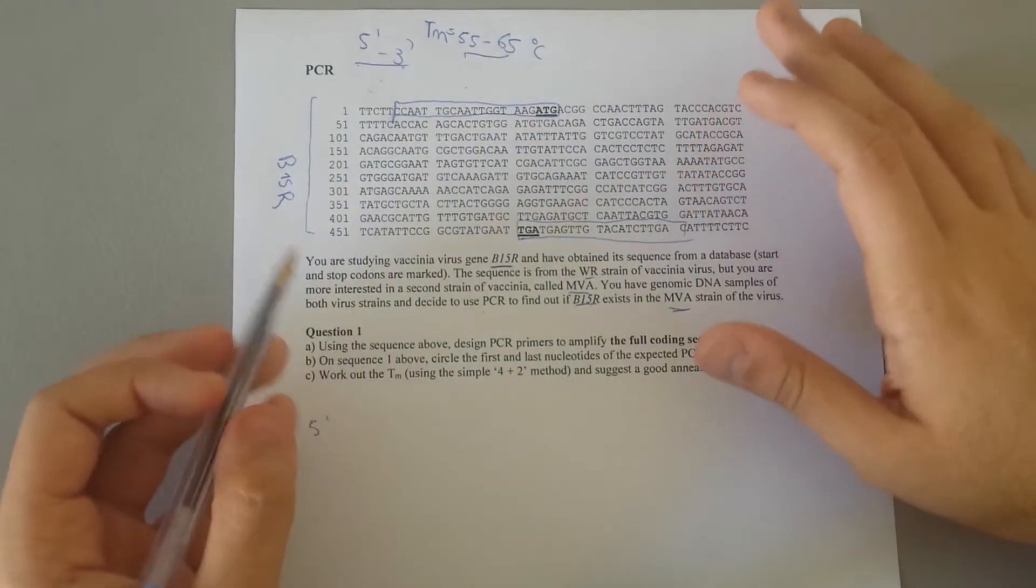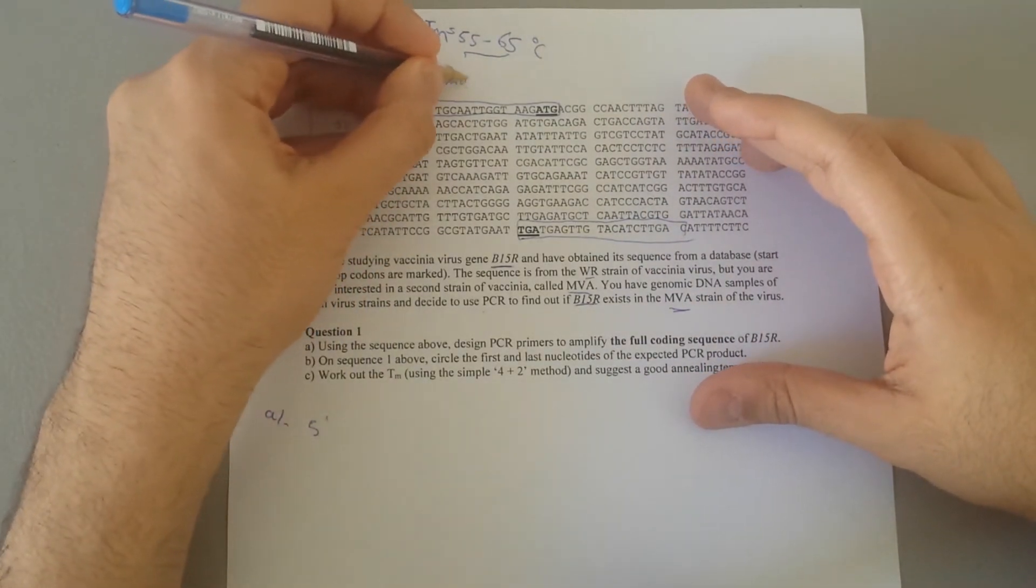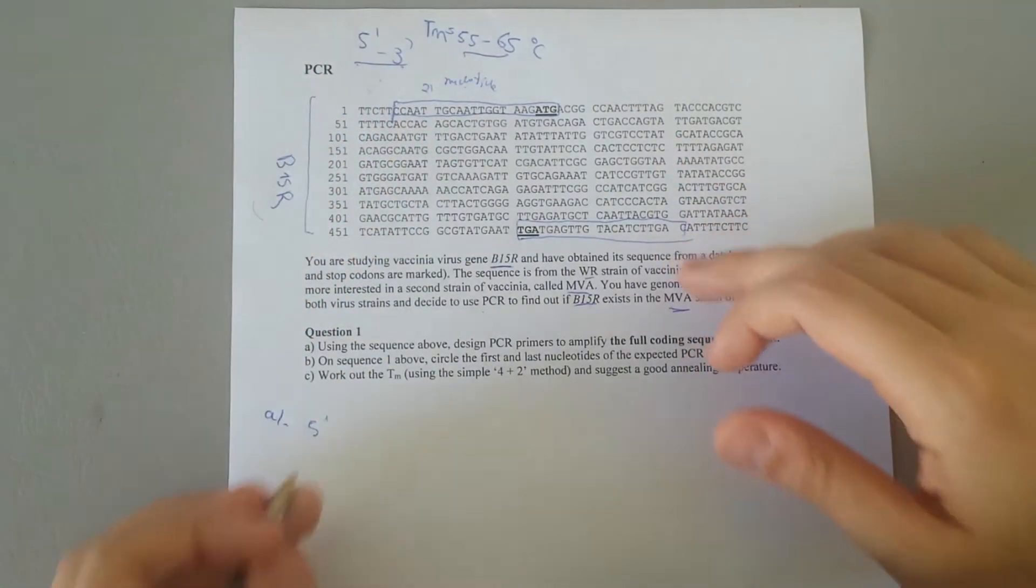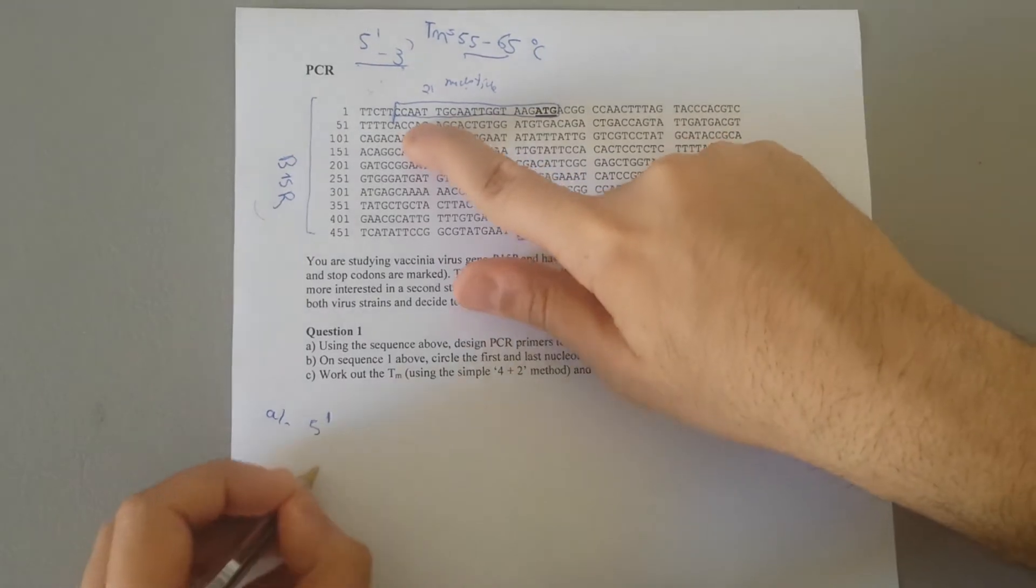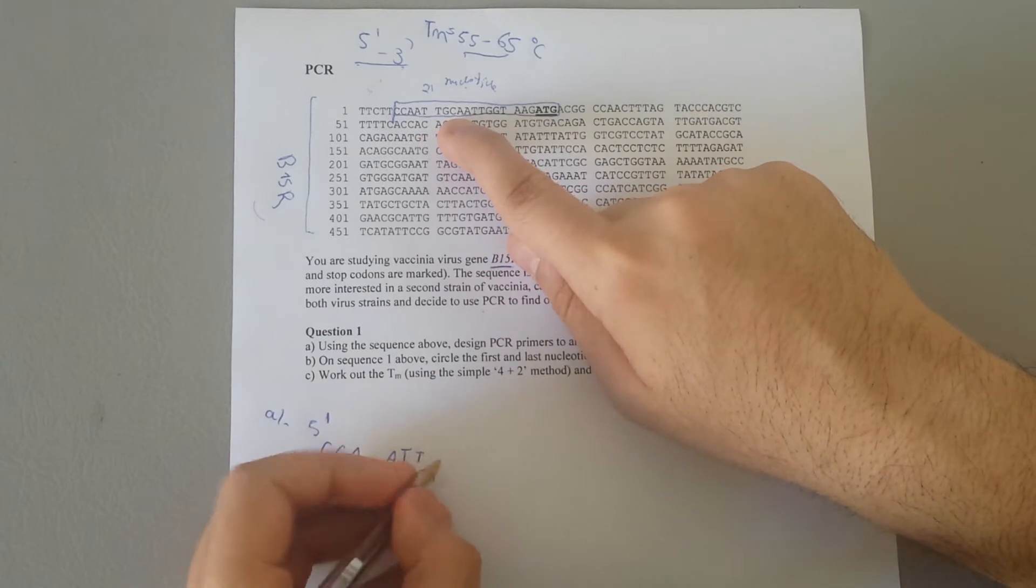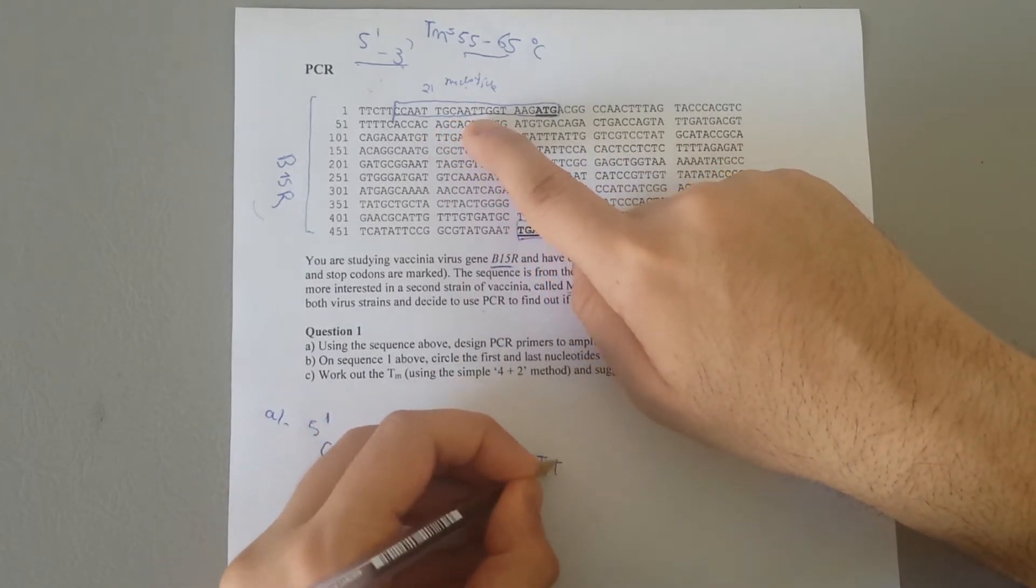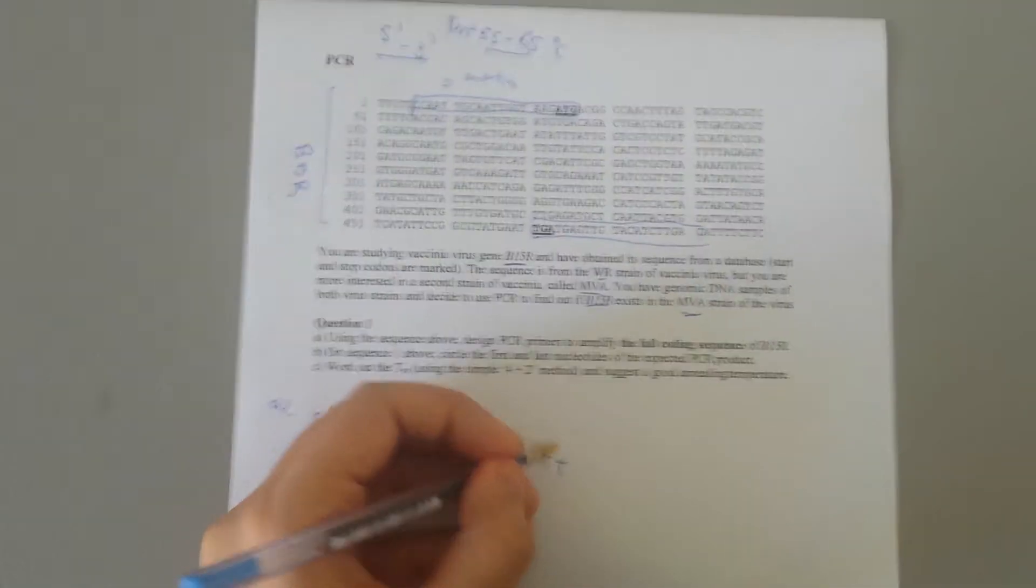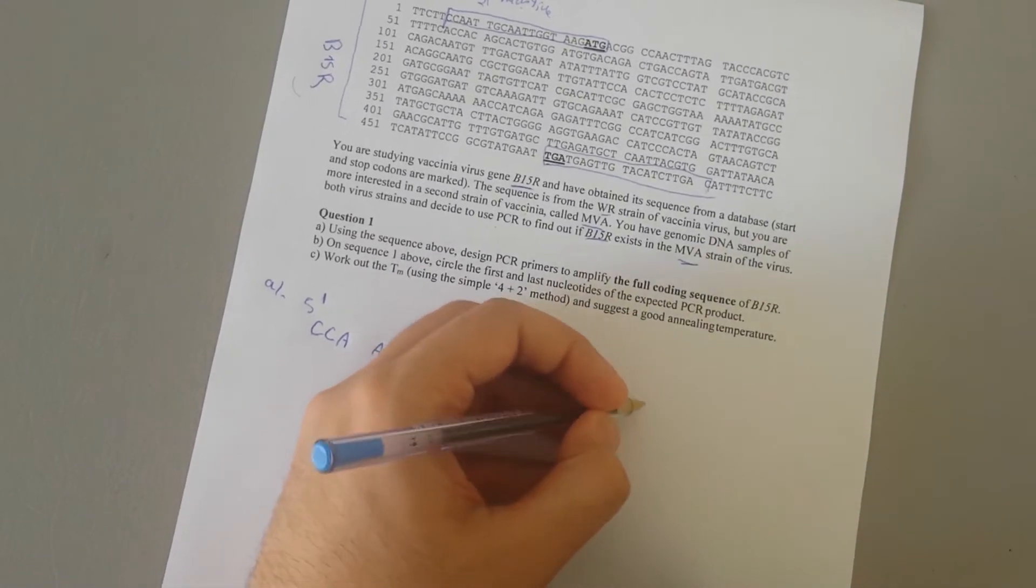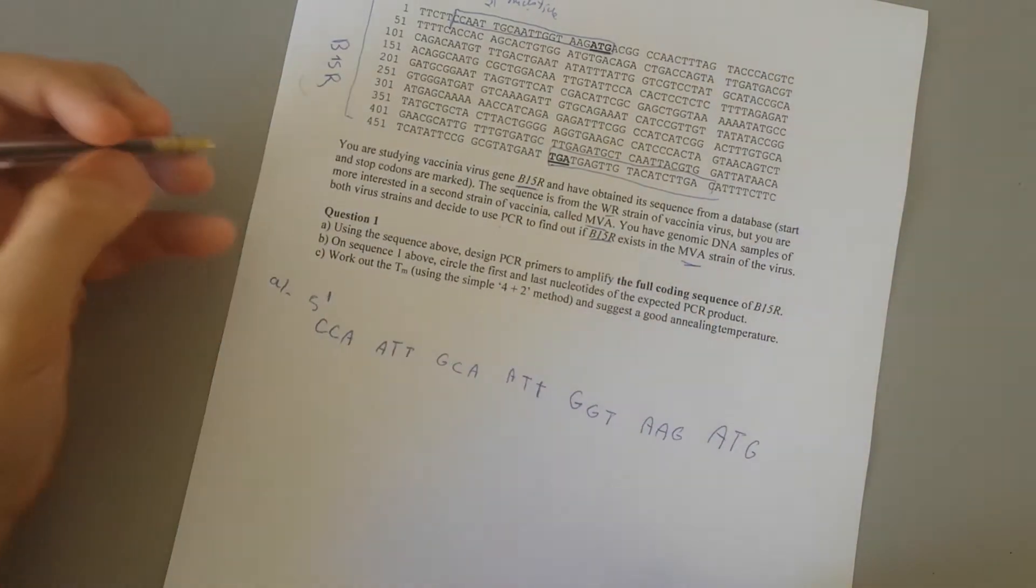So let me write it. The key point here, I just want you to note that if you're going with 21 nucleotides here as a forward primer, you should go with 20 nucleotides as a reverse primer as well. So let me write it down. So it is CCA, A-T-T, G-C-A, A-T-T, A-T-T, A-T-T, G-G-T, A-A-G, A-T-G.